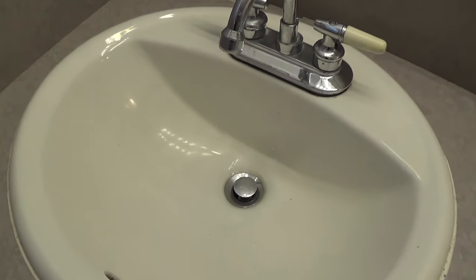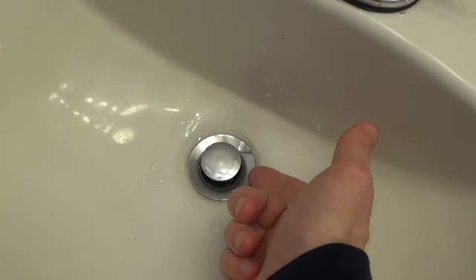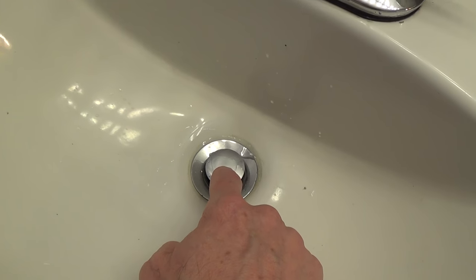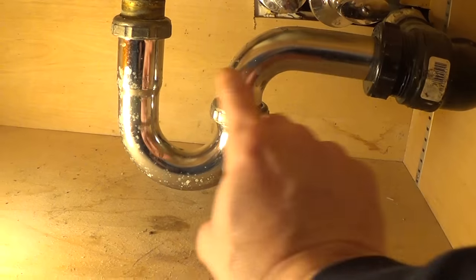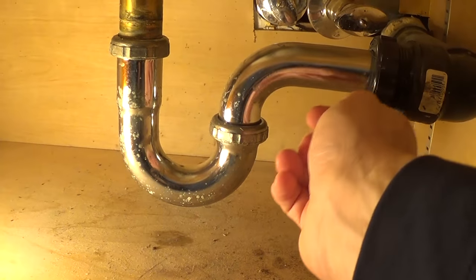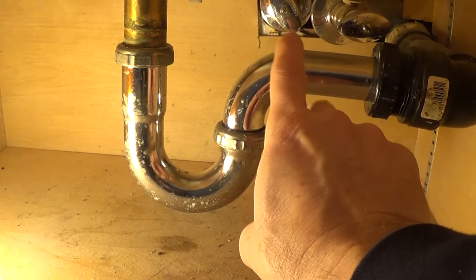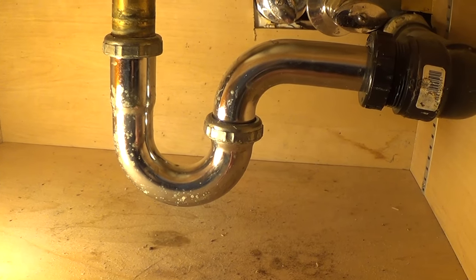Now before we actually can use the snake, we have to do one of two things. We either have to remove the pop-up stopper here. Or we have to remove the P-trap itself or the trap arm here so we can kind of stick in the snake through this. This is a little more complicated. I like to go through the pop-up stopper first.